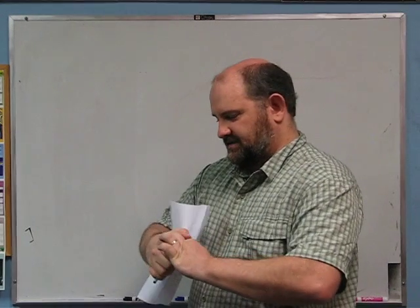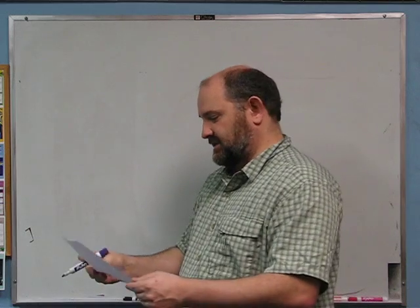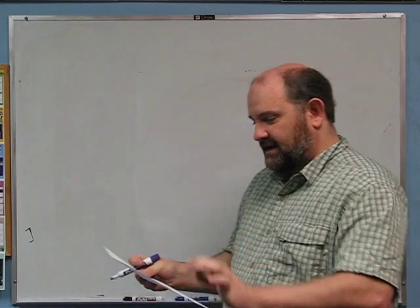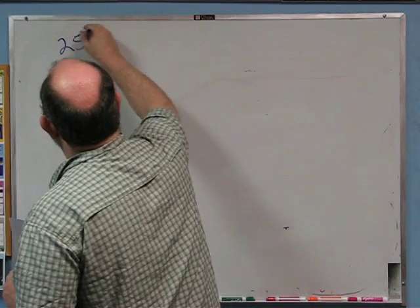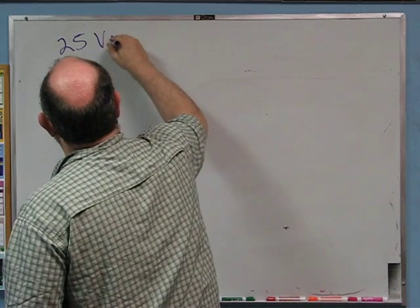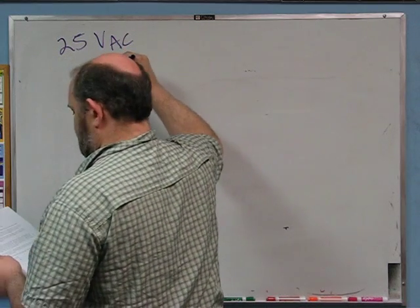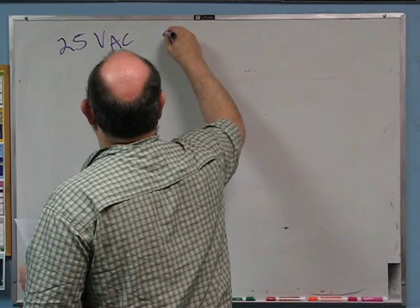AC and RC circuits. An AC voltage source is advertised to give 25 volts AC at 20 Hertz.